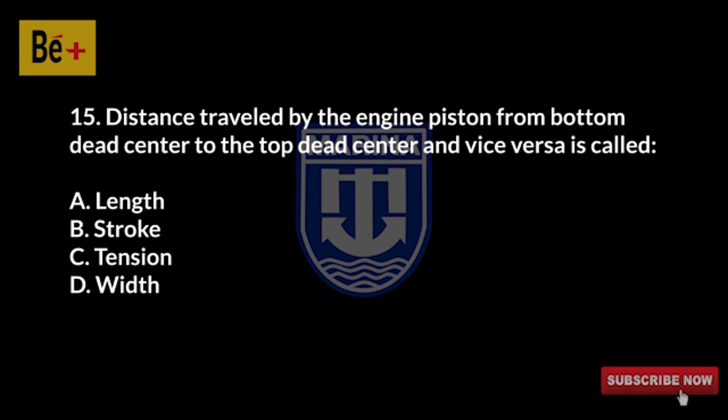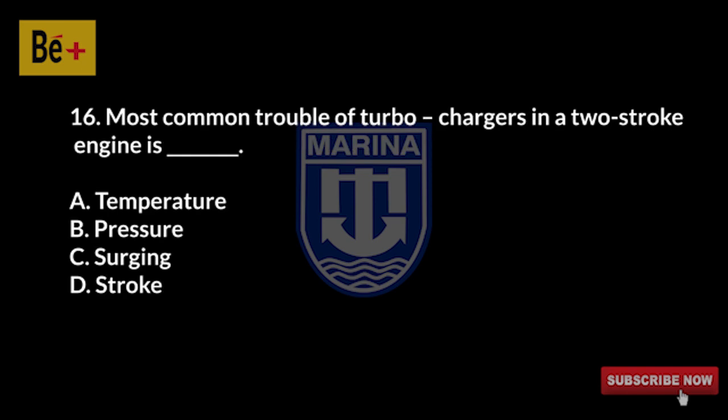The distance traveled by the engine piston from bottom dead center to top dead center and vice versa is called: A) length, B) stroke, C) tension, D) width. The answer is B, stroke.